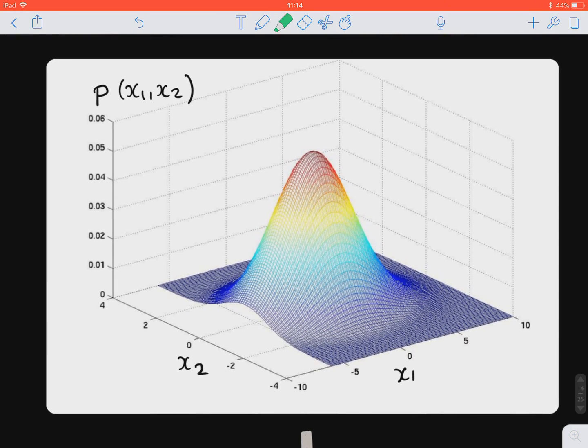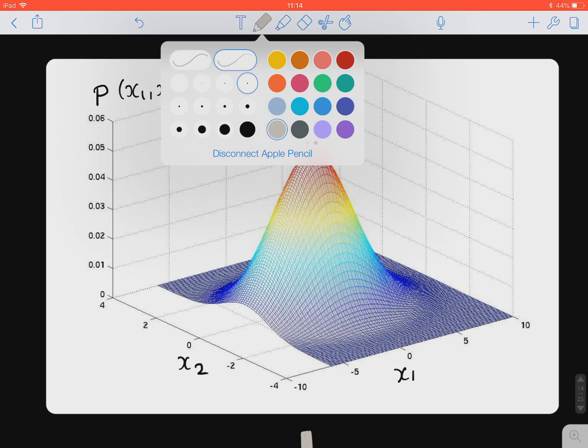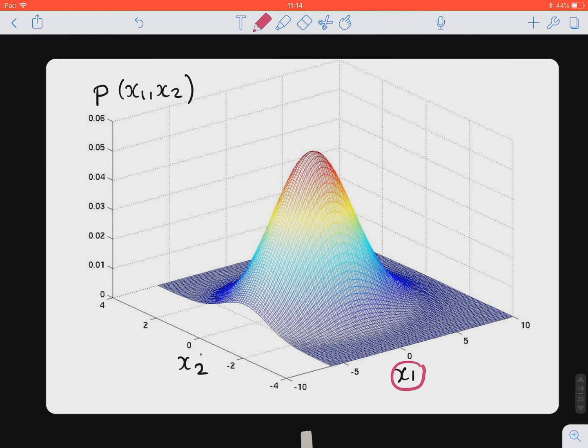For example, in this case, what do we have? We plotted the joint density, the joint probability density function of two variables, or two features, x₁ and x₂. And here, in the y-axis, we can measure the probability.